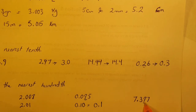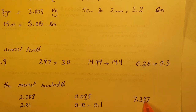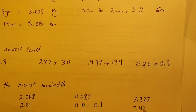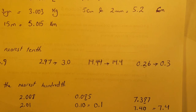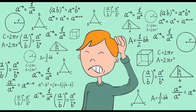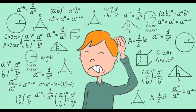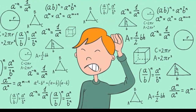For 7.397 rounded to the nearest hundredths: the hundredths digit is 9, followed by 7 — round up — so one is added to 9 making it 10, so 7.39 changes to 7.40 or 7.4. This is how we round decimals. If you're struggling with math, consider subscribing as we have different videos for different math topics.